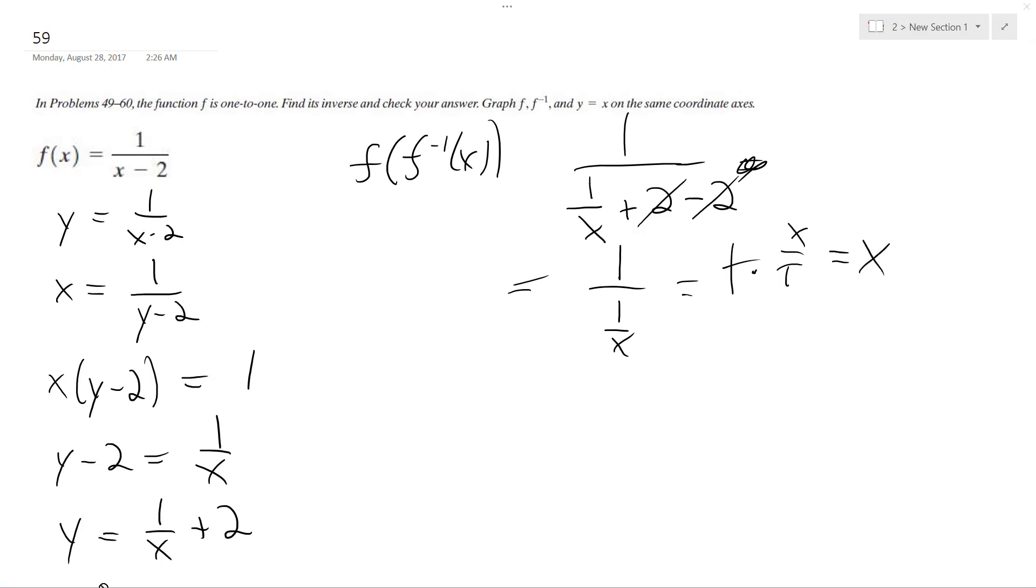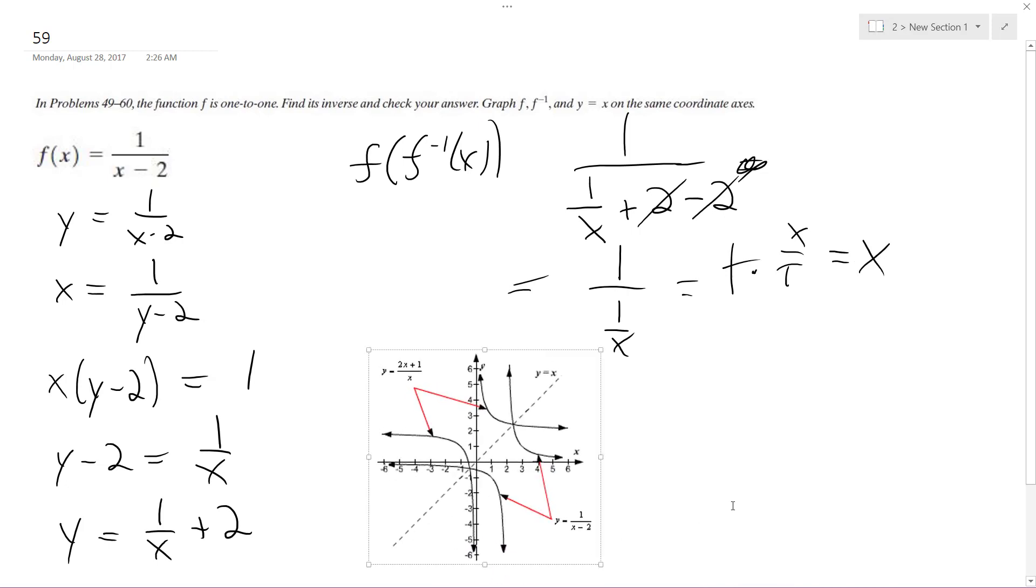And finally our graph looks something like this. So here's our original function, 1 over x minus 2, it's this one, and then the opposing side, they point out there, the inverse.